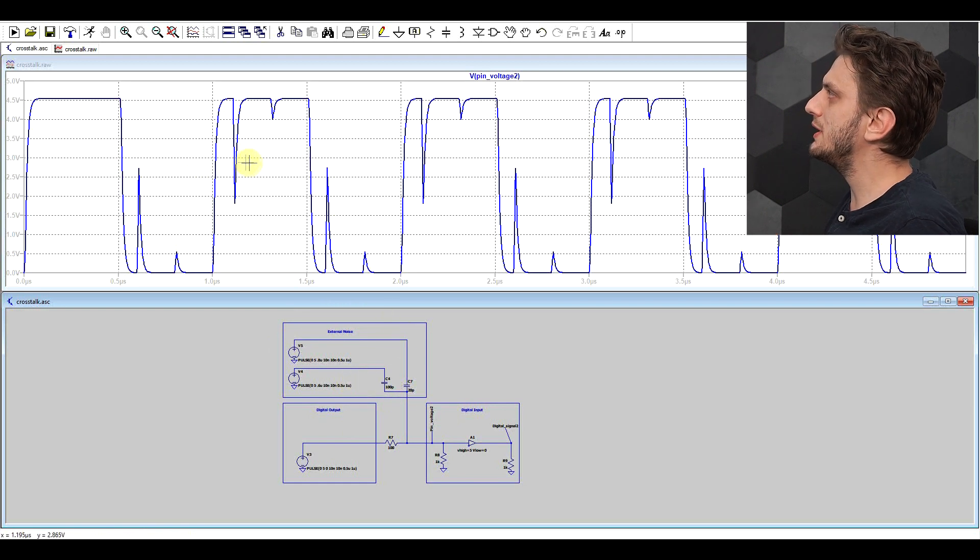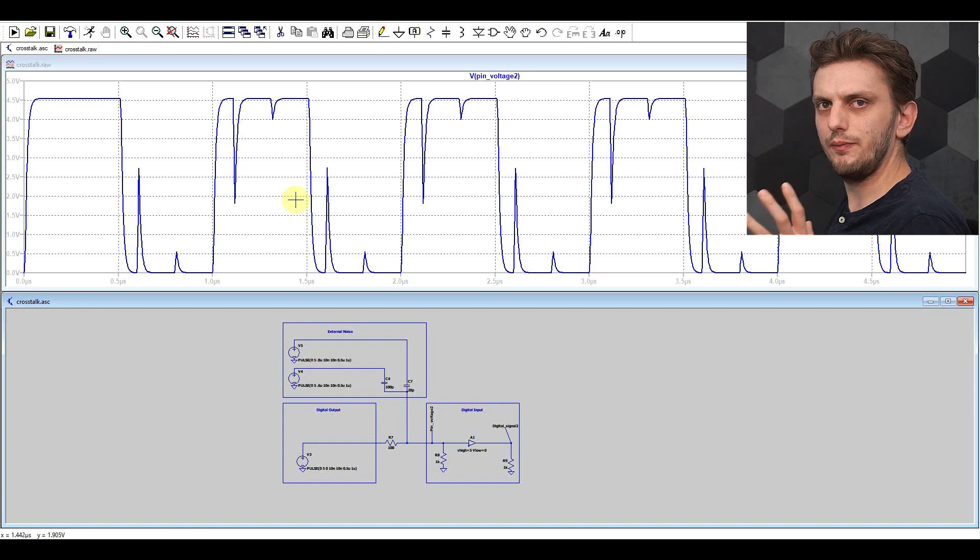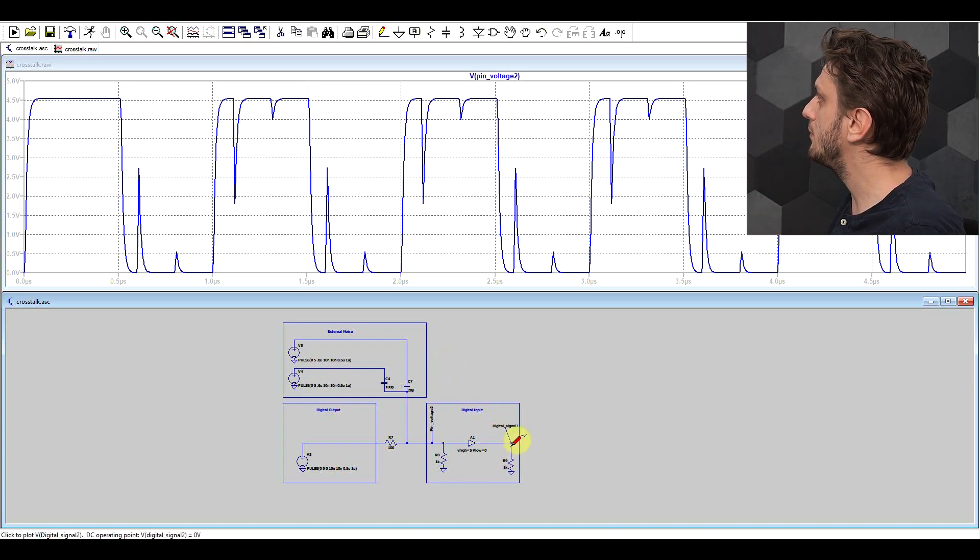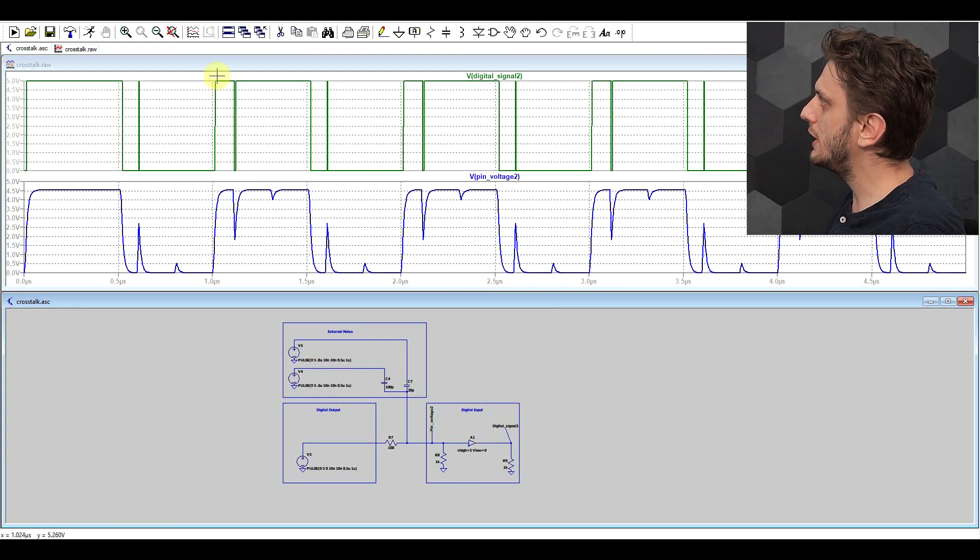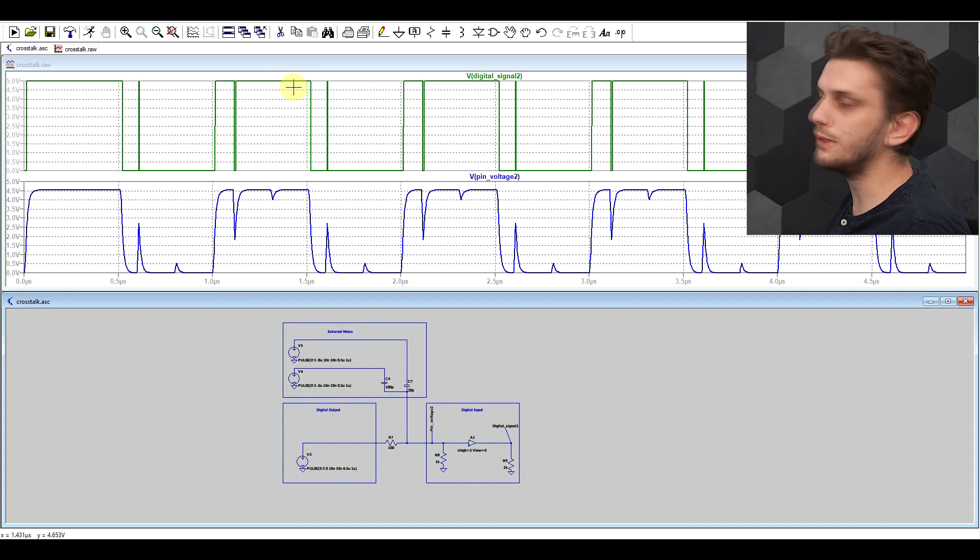And now you may think, well it's not that bad. But if we look at how the circuit is interpreting this, so if we look at the digital signal now, we see that apart from the nice input high low zeros and ones that we're supposed to be getting, we are also seeing the glitches.